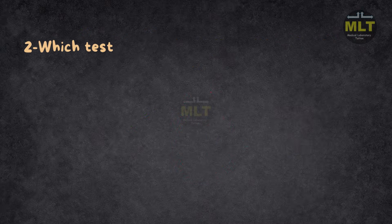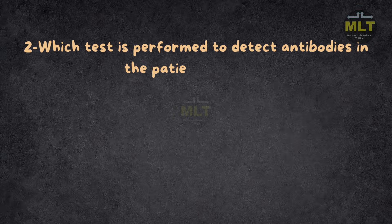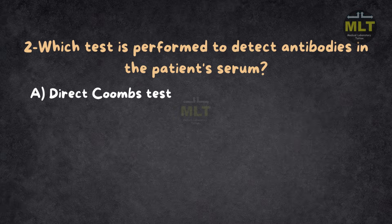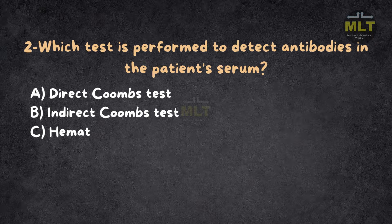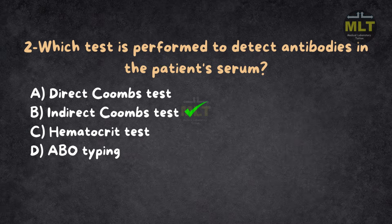Question 2: Which test is performed to detect antibodies in the patient's serum? Option A: Direct Coombs test. Option B: Indirect Coombs test. Option C: Hematocrit test. Option D: ABO typing. Correct answer: B, Indirect Coombs test.